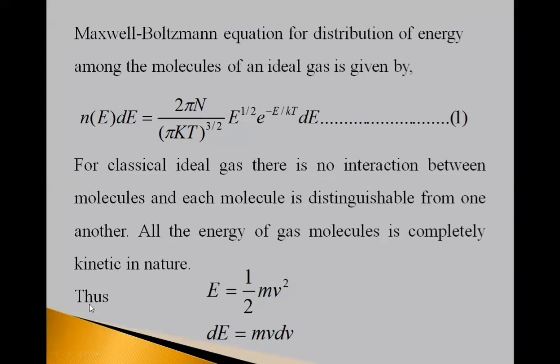We have differentiated this E as dE. So, here one half constant, m is constant and v square differential is 2vdv. So, two gets cancelled, so mvdv.